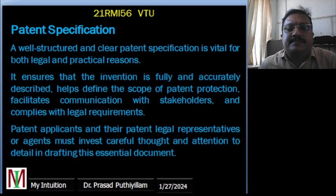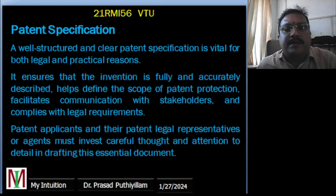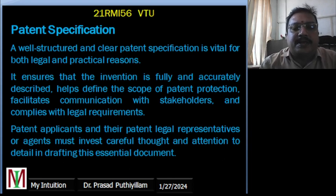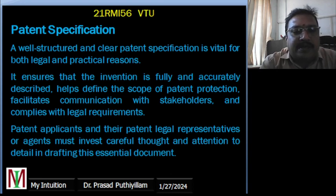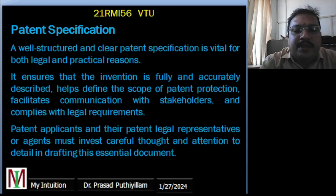Patent specification plays a very vital role in claiming our patent — what type of patent we have — and the description or specification makes it very easy to get it published. A well-structured and clear patent specification is vital for both legal and practical reasons. It ensures that the invention is fully and accurately described, helps define the scope of patent protection, facilitates communication with stakeholders, and complies with legal requirements.